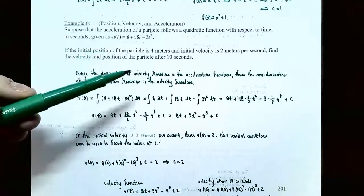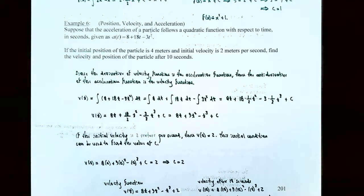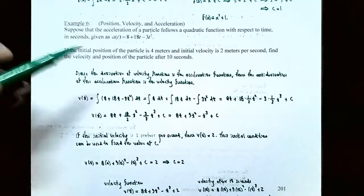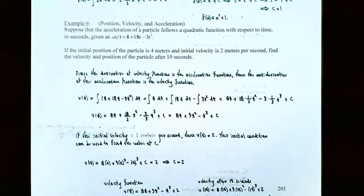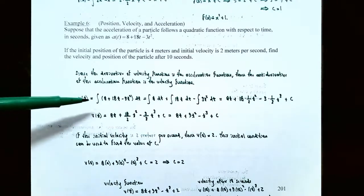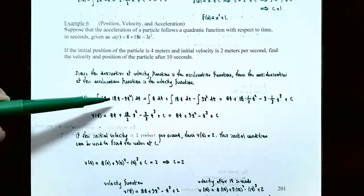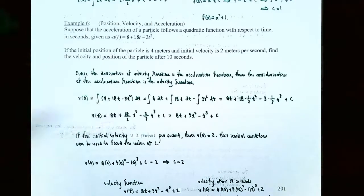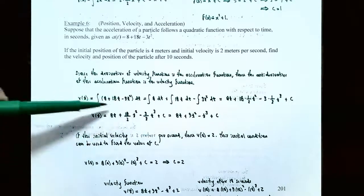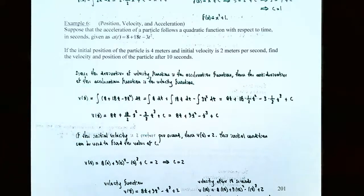Since the derivative of the velocity function is the acceleration function, the antiderivative of the acceleration we're given would be the velocity function. So let's find the velocity function by finding the family of antiderivatives. V(t) for the velocity function is the indefinite integral of 8 + 18t − 3t² dt. We're taking the family of antiderivatives for the acceleration function to get velocity.